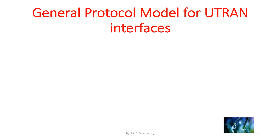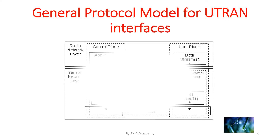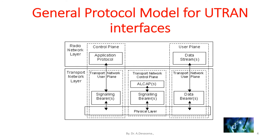This makes it possible to change the transport network layer without affecting the radio network layer if required. The general protocol model for U-tron interfaces is shown below. In this representation, we have two horizontal layers highlighted — one is the radio network layer and the other is the transport network layer. We also have the control plane as well as the user plane of U-tron, and between them, the transport network control plane is indicated.